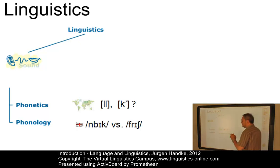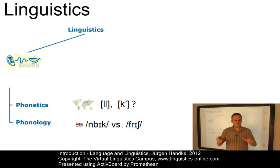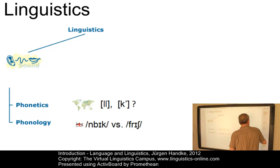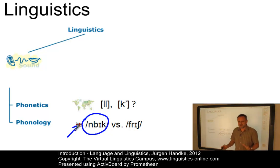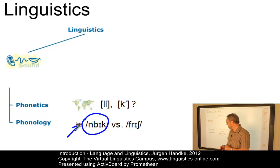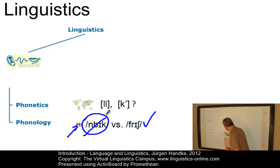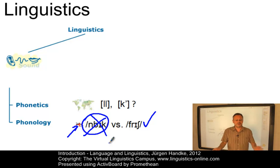We can also ask about the principles governing the sound systems of particular languages — this branch is referred to as phonology. For example, is something like 'Mbik' a possible word in English? We all know it is not, and obviously there are some principles at work that we have to define. By contrast, this word 'frish' could well be an English word — however, it doesn't exist.